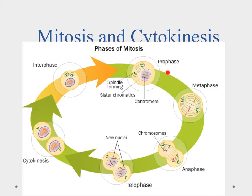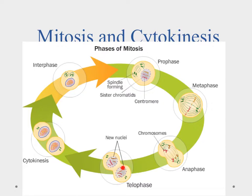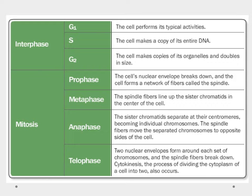Quick review of mitosis: in prophase, centrioles and spindle fibers form, the nuclear membrane dissolves, and chromosomes thicken. In metaphase, chromosomes line up in the middle and spindle fibers attach to centromeres. In anaphase, sister chromatids separate and migrate to the poles along the spindle fibers. In telophase, the mitotic spindle disappears, the nuclear membrane reforms, and cytokinesis begins, ultimately producing two daughter cells that enter interphase.